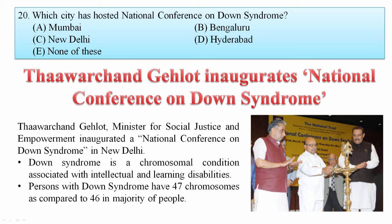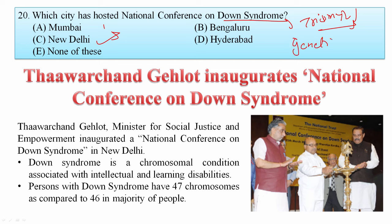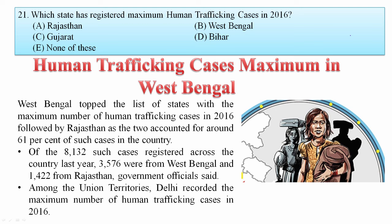Which city hosted the National Conference on Down Syndrome? Thawar Chand Gehlot, Minister of Social Justice and Empowerment, inaugurated a National Conference on Down Syndrome in New Delhi. Down Syndrome, also known as Trisomy 21, is a genetic disorder caused by the presence of all or part of a third copy of chromosome 21, associated with physical growth delays and mild to moderate intellectual disabilities. Your answer is New Delhi.